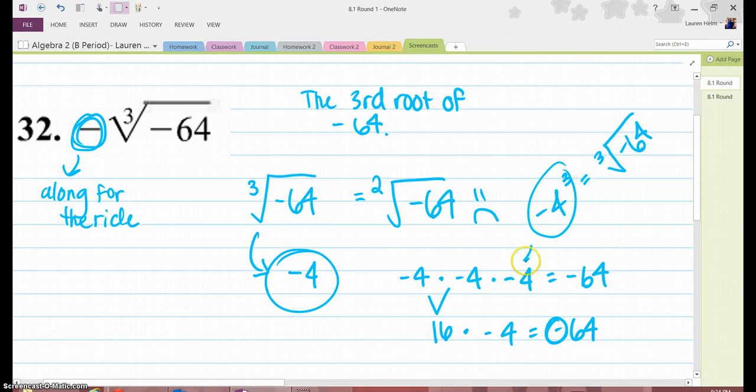This is the same thing as this. Negative 4 times negative 4 times negative 4 equals negative 64. The reason why this turns out to be negative is because once you multiply negative 4 times negative 4, you get a positive number, which is 16.